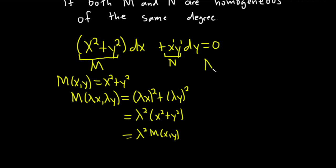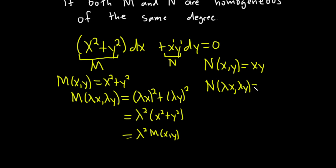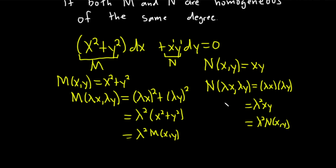For N(x, y) = xy, we replace x with λx and y with λy. This becomes (λx)(λy) = λ²xy = λ² N(x, y). So N is also a homogeneous function of degree 2. They're both homogeneous functions of the same degree, so the DE is homogeneous.